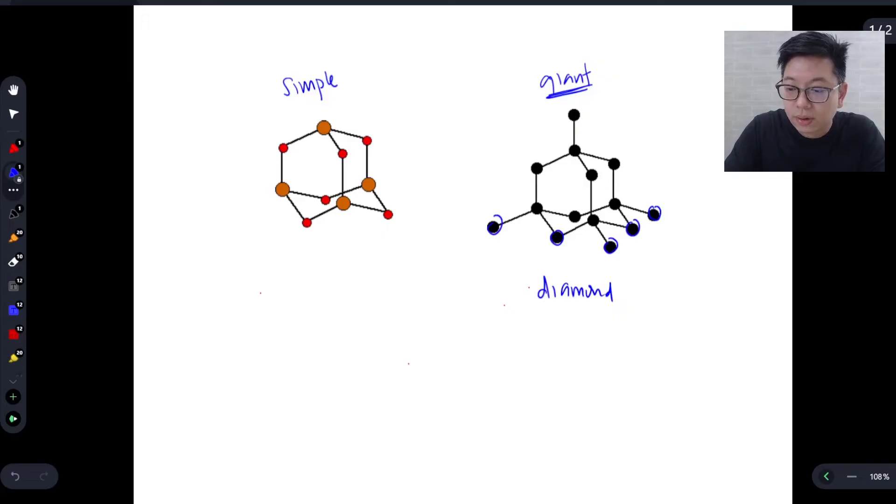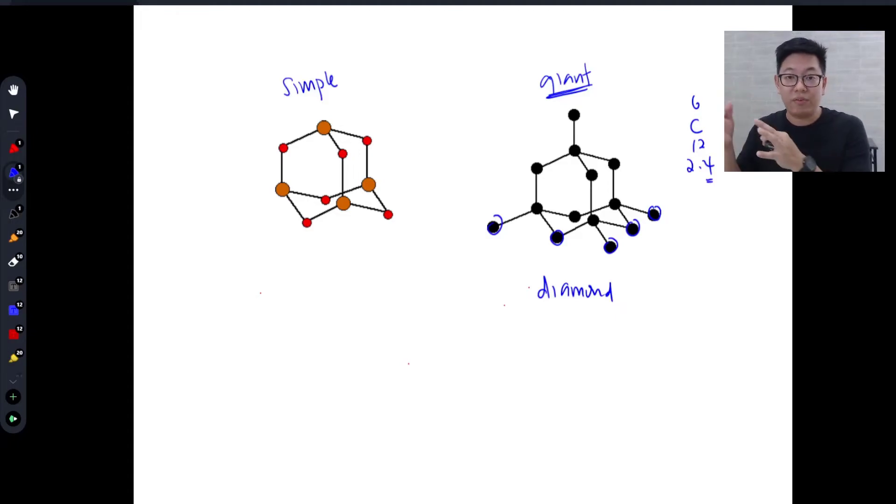Recall carbon is 6 12, 2.4. So carbon basically only has four valence electrons and in order for it to become stable, it must gain four electrons. For it to gain four electrons, it must form four bonds. Once again, carbon has four valence electrons. To become stable, it must gain four and for that to happen, it must form four bonds.